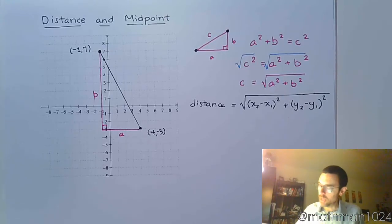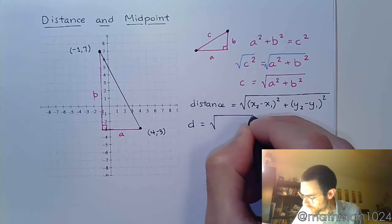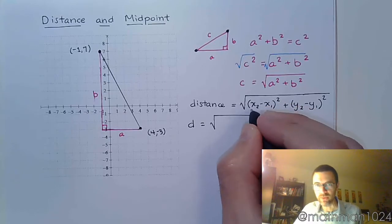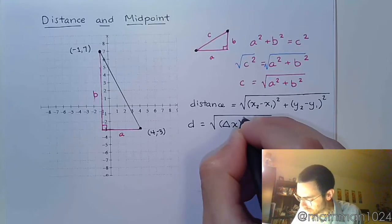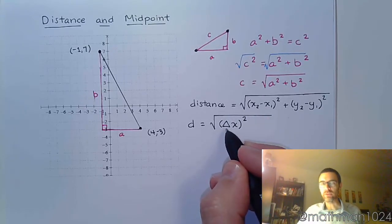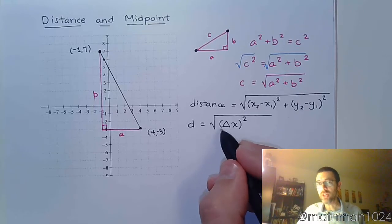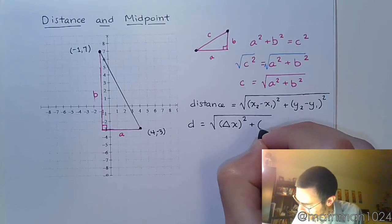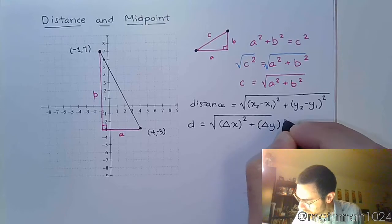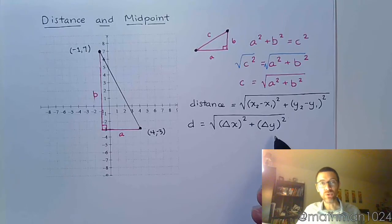I mean, they're not wrong, but here's what I say. So d for my distance is the square root. Instead of doing this, I'm going to write delta x. Now, this is the capital Greek letter delta, and typically in math and science, that means the change. So I'm talking about the change in x, and of course, to find change, you would subtract, plus, and I'm going to write delta y for the change in y. So this is the way I like to do my formula. To me, it's a little bit easier to work and understand, but do what you need to do.